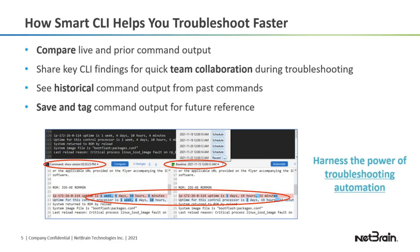I'll also show you how you can save your output with a descriptive tag — for example, if you wanted to run a command before an upgrade, so that when you do the upgrade, you can go and reference what the output was prior to that.